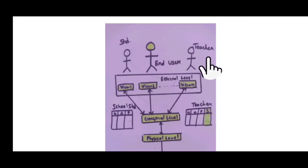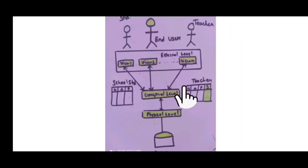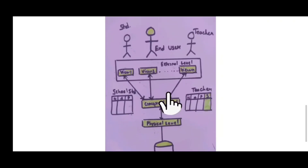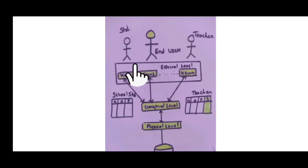For example, there are two types of end users: one student and one teacher. The student view has fields like name, role, and grade. The teacher view has fields like name, phone, address, and date. If you make changes at the conceptual level, you don't have to rewrite or alter the external views for students or teachers. That's logical data independence.